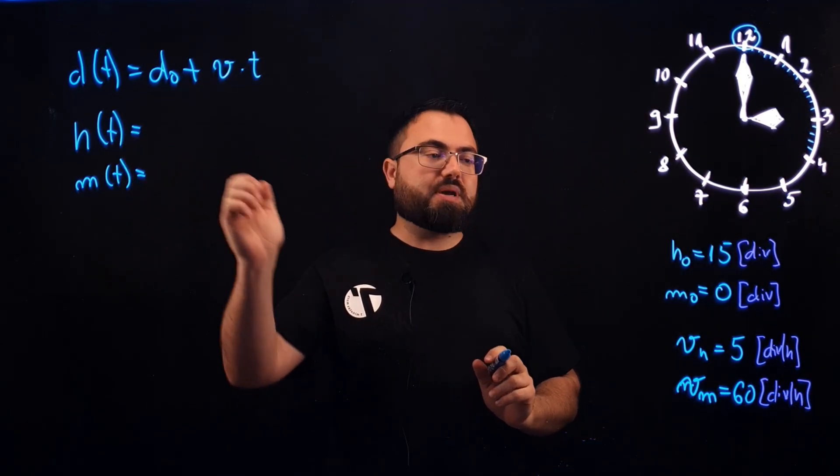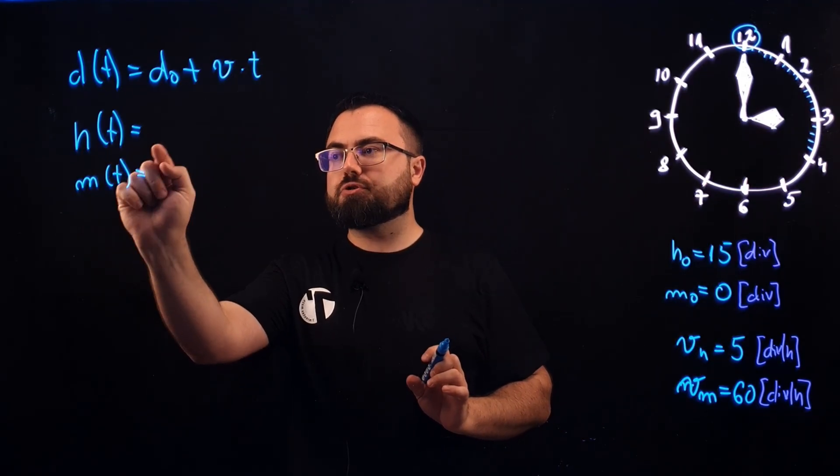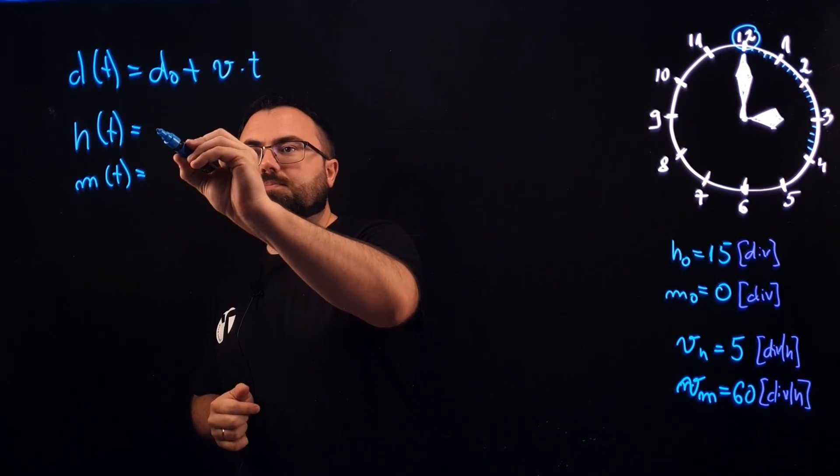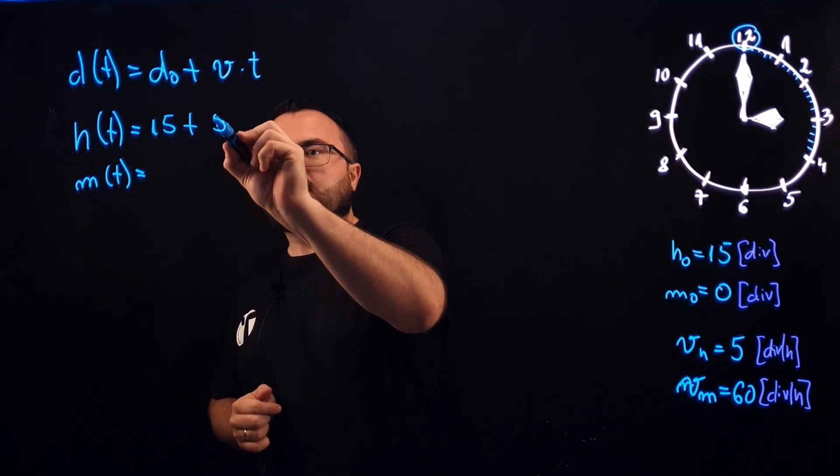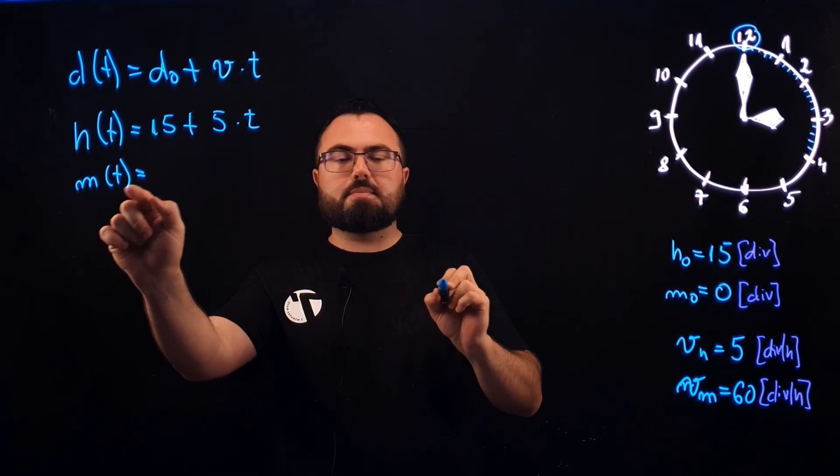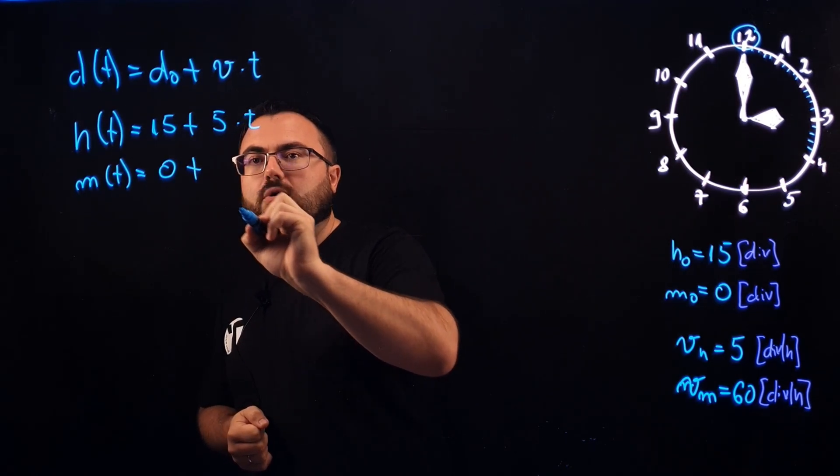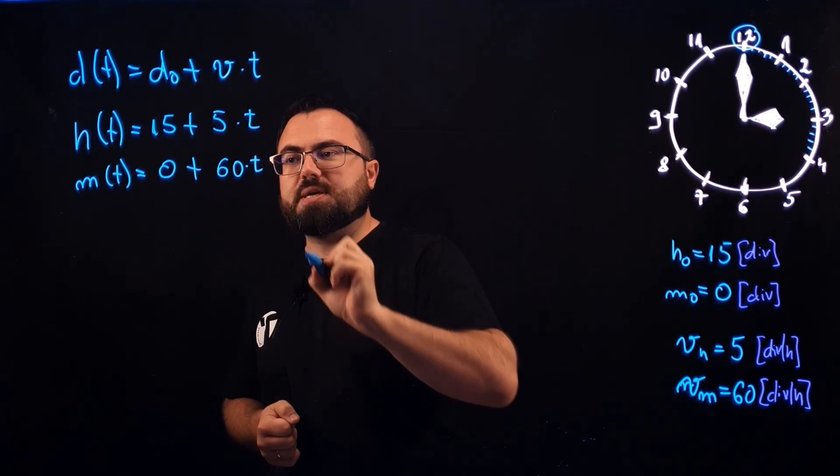So now it's easy, we just need to replace everything that we defined into our two equations h(t) and m(t). So h(t) will be 15 plus 5 times t and m(t) will be 0 plus 60 times t.